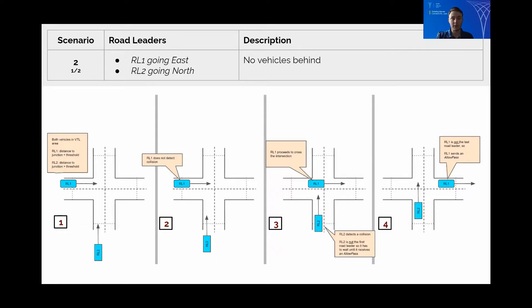Road Leader 2 passes the threshold and detects a collision. Since it's not the first road leader it needs to wait until it receives an allow pass message before it can go.